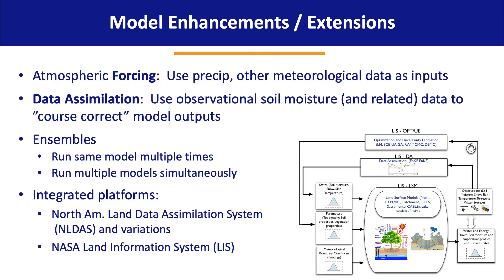Similarly important is data assimilation — the use of observational soil moisture and related data to course-correct the model as it goes along. In this case you would be running a model while also taking observational data, doing some comparison and blending of those two values to find the truer actual soil moisture conditions.